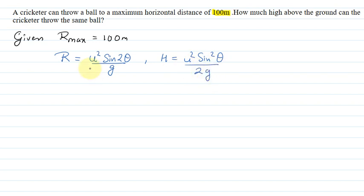Now we have one thing about maximum value. When it comes to maximum value, then sin 2 theta is maximum. So from here, sin 2 theta is 1.